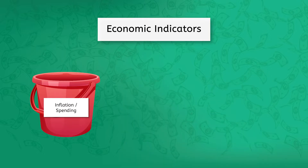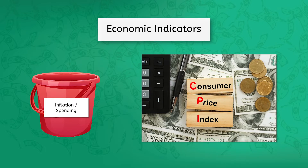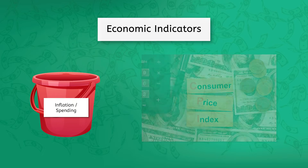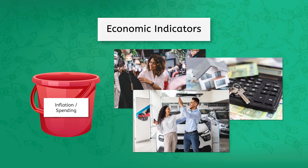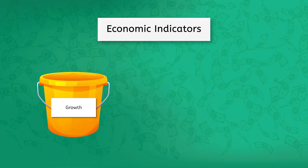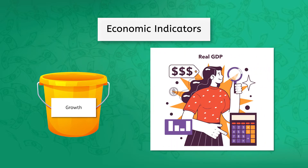To track inflation and spending, the Fed watches the CPI as a major indicator, along with spending in areas like retail, housing, and vehicles. By watching purchasing and sales patterns, the Fed can track changes in overall supply and demand that might show problems needing to be addressed. To track growth, the primary indicator is real GDP, which is adjusted for inflation — making it a more accurate measure of economic growth or decline over time. Purchasing and sales patterns can also indicate economic growth.